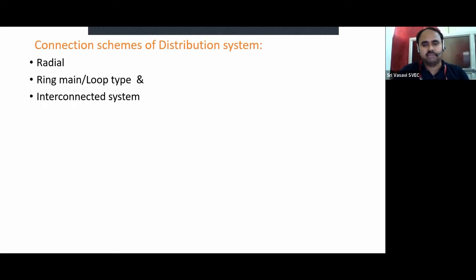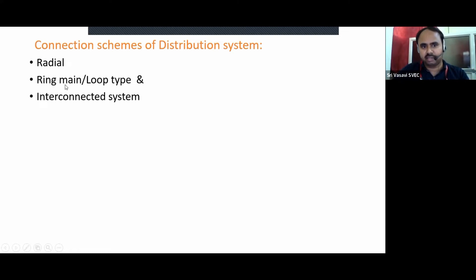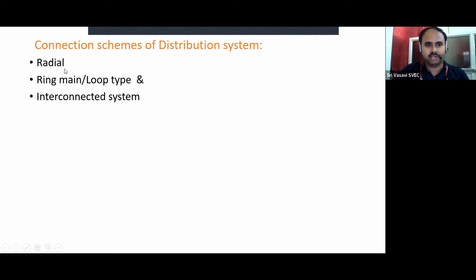Connection schemes of distribution system: what are the various connection schemes used? There are three — first is radial, second is ring main, also called loop type, and third is interconnected system. In this session, I am going to discuss only the two main types: radial and ring main or loop type distribution systems.